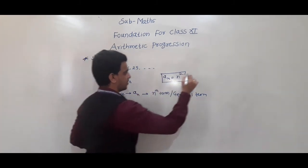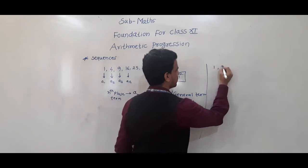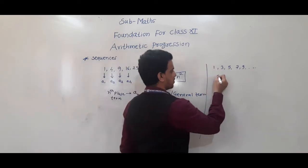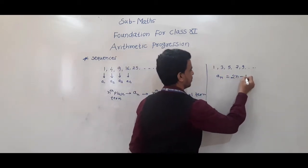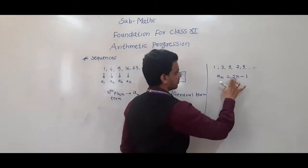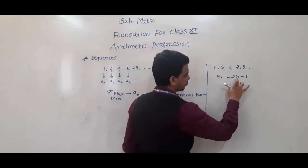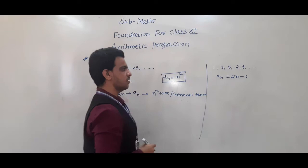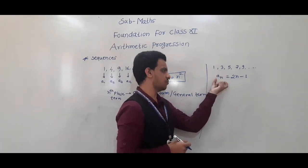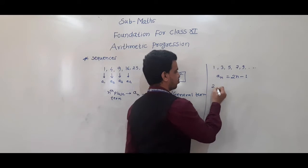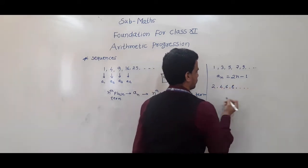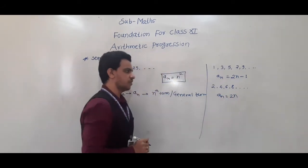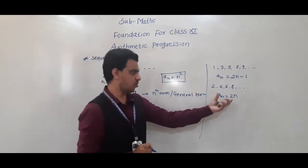We can take another example: 1, 3, 5, 7, 9 and so on. Here the general term is 2n − 1. Because if we put n = 1, then 2×1 − 1 = 1. If n = 2, 2×2 − 1 = 3. So, for this sequence, general term is 2n − 1. Or if we take 2, 4, 6, 8 and so on, the general term is 2n. So, this is the general term or nth term.